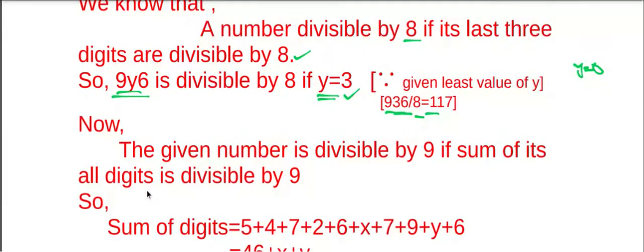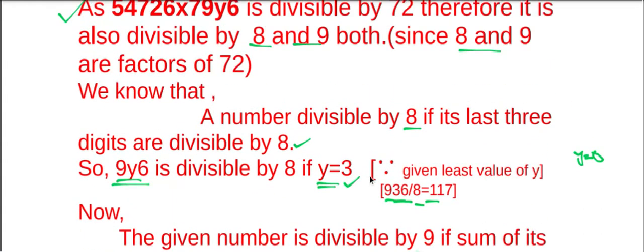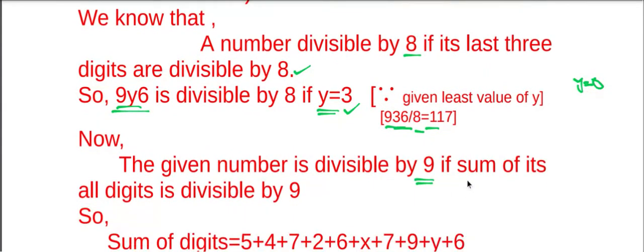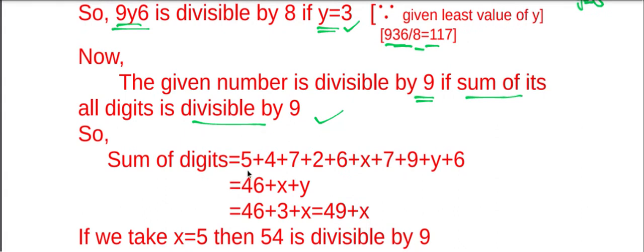Now, the given number is divisible by 9. Since we know that if a number is divisible by 9, then sum of its digits is also divisible by 9. So here sum of all digits: 5 plus 4 plus 7 plus 2 plus 6 plus x plus 7 plus 9 plus y plus 6. That is equal to 46 plus x plus y.